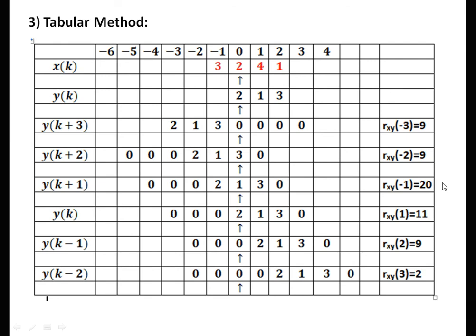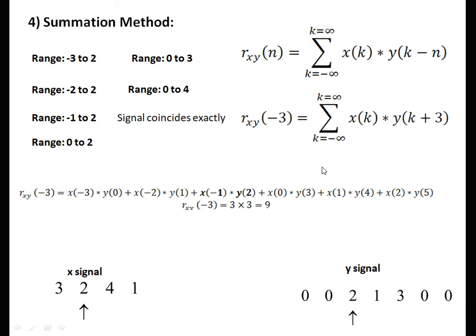Corresponding element multiplication gives the signal values. Next is the summation method. For summation, we should know the range, which we get from the graphical method. The problem is solved only for the single term at minus 3: R_xy(minus 3) = x(k) into y(k plus 3). The signal values are present at x(minus 1) and y(2), which is 3 into 3 = 9. At all other locations, one value is 0. Better to follow the matrix, graphical, or tabular method rather than the summation method.